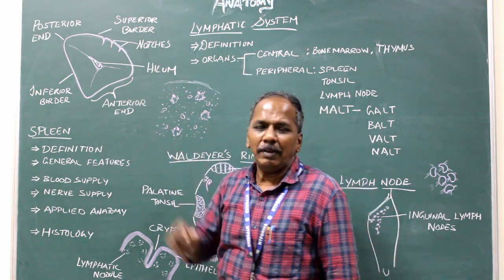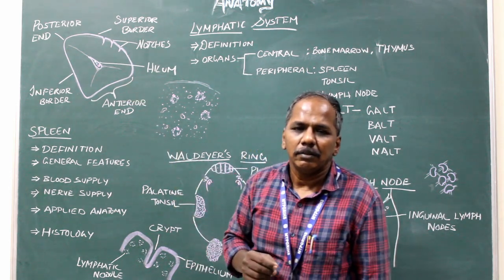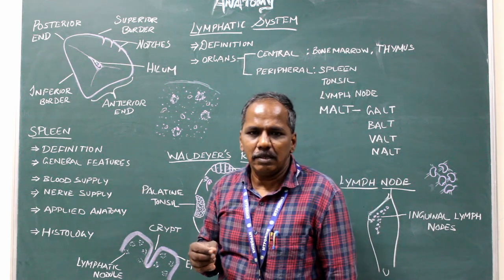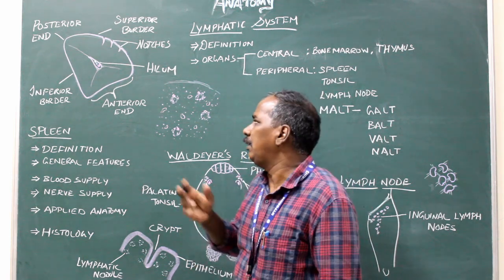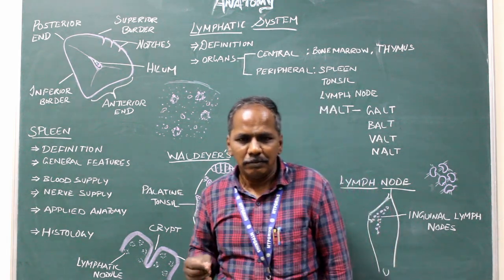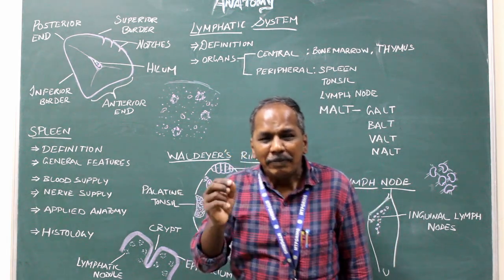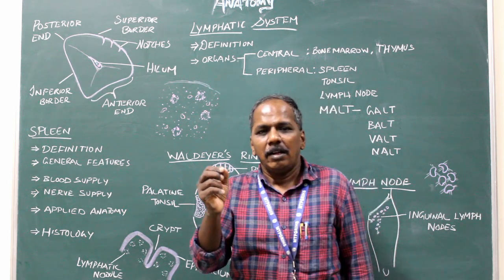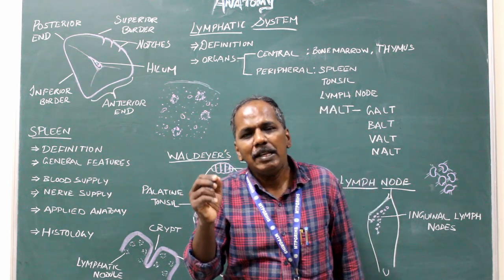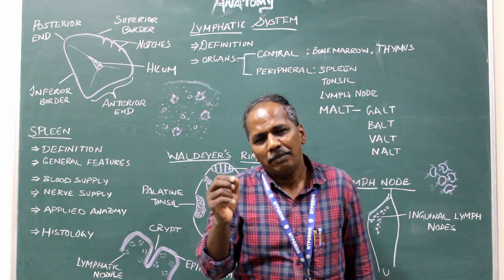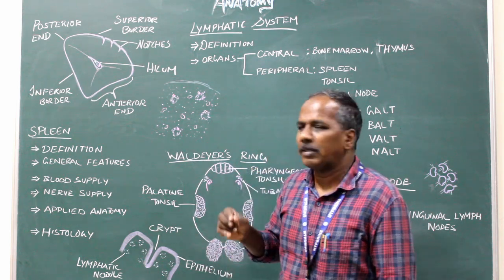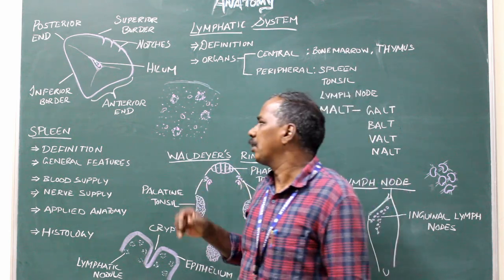Blood supply of the spleen: splenic artery. Venous drainage: splenic vein. Nerve supply: sympathetic fibers derived from the celiac plexus, also known as the celiac network of nerves.